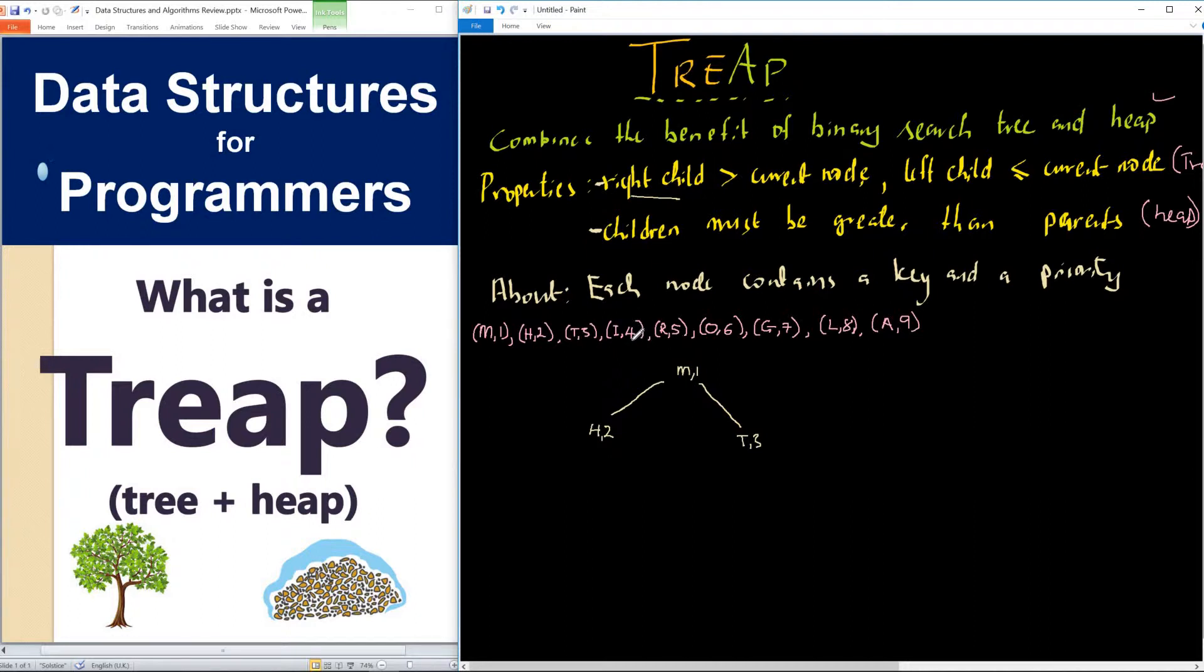The next one is I4. We look at I4, 4 is less than 1, is less than 2 and 3, so it could either be somewhere here or somewhere here. If we look at I, I is less than M, so it actually goes this way. Comparing I to H, I is greater than H, so it means that it has to go to the right of H. So here we have I4.